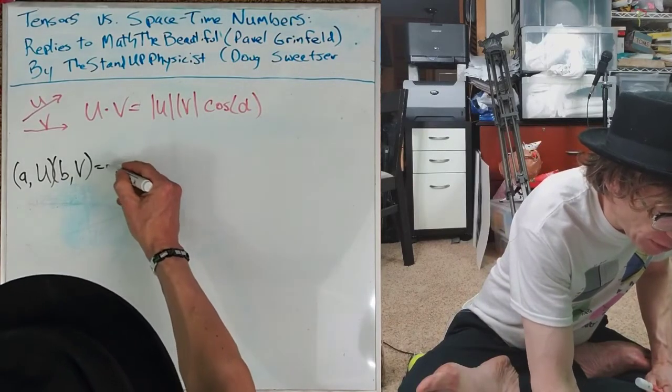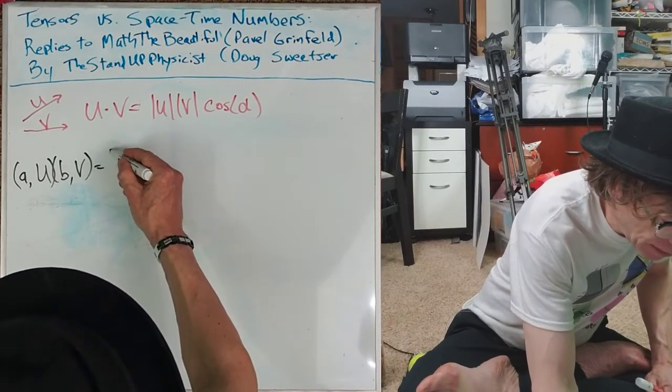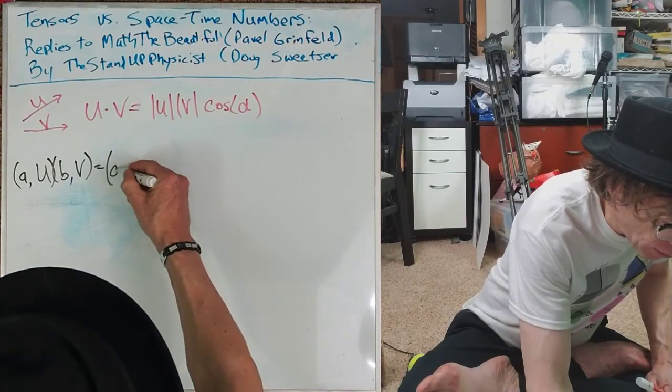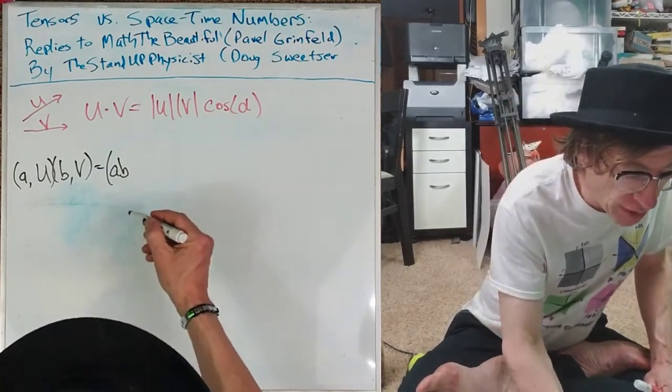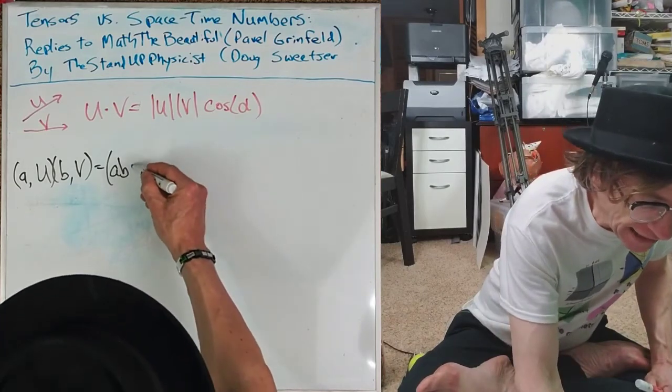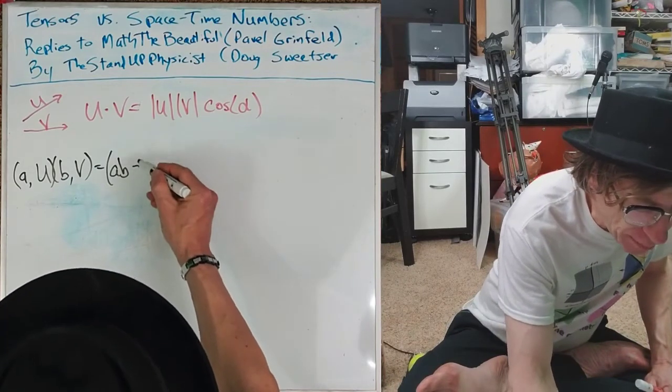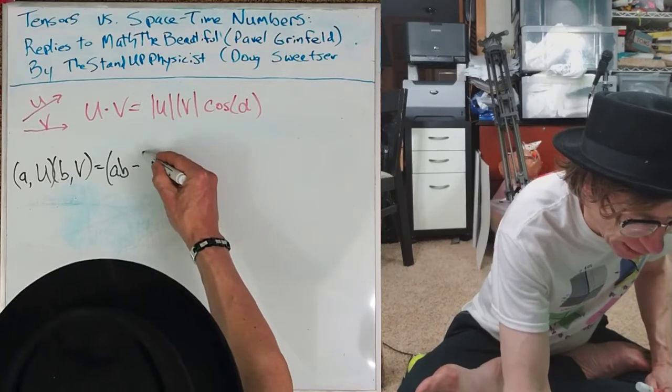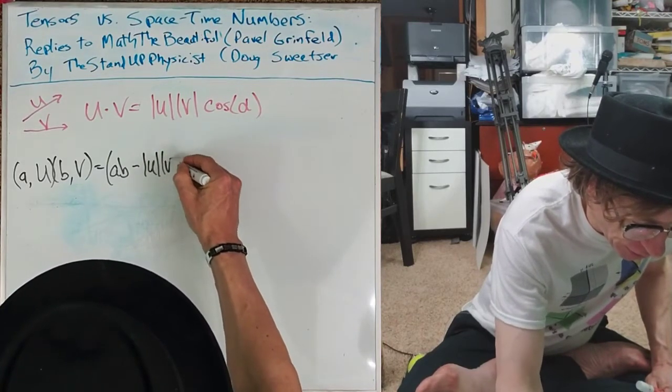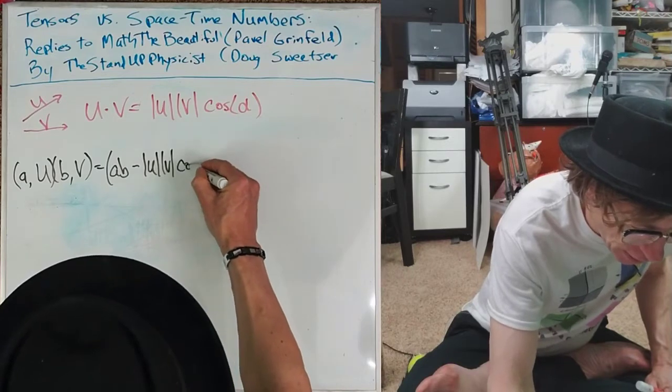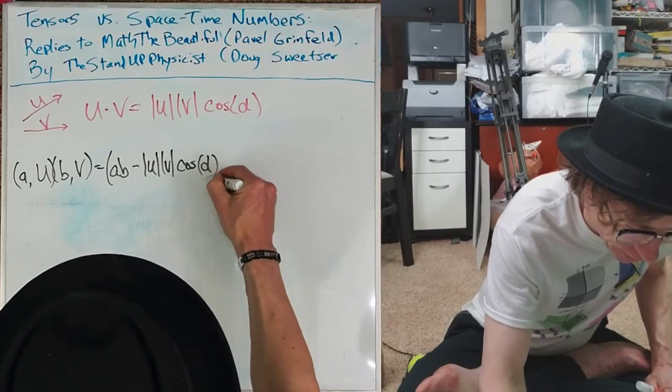what do you get when you form the spacetime number product? You get, well, scalar times the scalar is a scalar. And then, yes, you do get that exactly the same dot product, but there's this minus sign in there. We're not going to worry about it because we're not worriers. Cosine alpha. Great. Okay.